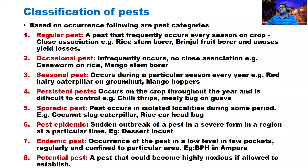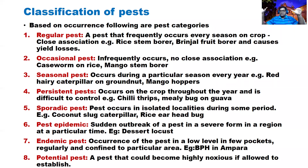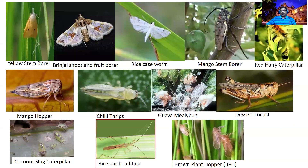Seasonal pest means you can expect the pest only in a particular season. Some pests come in the Maha season but not Yala, or when the rainy season starts, or in the dry season. An example is mango hopper. If you go to a mango orchard, thousands of hoppers will be there. The leaves become blackish with burn-like appearances at the tips.